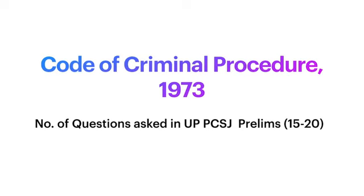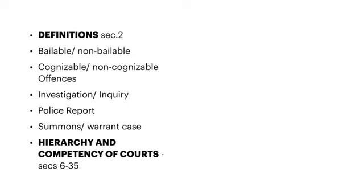Criminal Procedure Code mein aapke core areas dhekne hain. UPSC PCS jay mein CrPC ke 15 se 20 questions aate hain. Sabse pehle jo definition section hai, wahan aapko achhe se prepare karna hai — usme saare terms diye huye hain. Wahan se questions aate hain: bailable, non-bailable, cognizable, non-cognizable offenses, investigation, inquiry, police report, summons case, warrant case — ye sab achhe se dekh lijiye. Uske baad hierarchy and competency of courts.